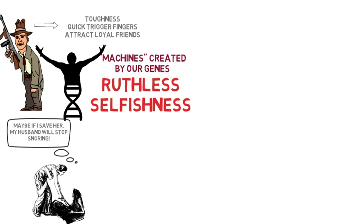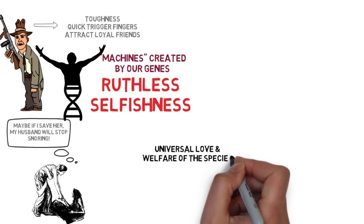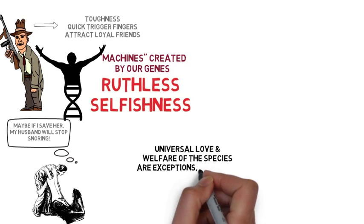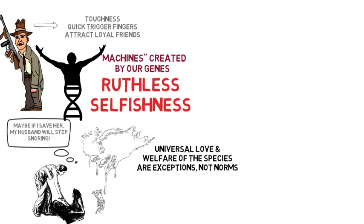Dawkins wants to remind us that concepts of universal love and welfare of the species are exceptions within evolution. He warns that the book is not advocating a morality based on evolution. On the contrary, he believes that a human society based simply on ruthless selfishness would be a very unpleasant society to live in.